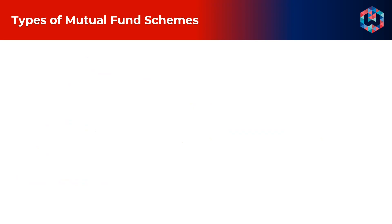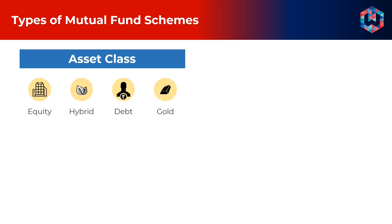Mutual fund schemes come in various types. They can broadly be classified on the basis of the asset classes that they invest in, the mode of investment, their liquidity, and their cash flows. On the basis of assets, the types of funds include equity that invests in shares, debt that invests in bonds, gold that invests in gold, and hybrid that invests in a mix of these asset classes.